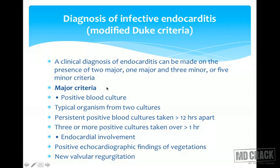Major criteria include: positive blood culture with a typical organism from two cultures, or persistent positive blood cultures taken more than 12 hours apart, or three or more positive cultures taken over one hour apart. Endocardial involvement shown by positive echocardiographic findings of vegetations, or new valvular regurgitation, also constitutes a major criterion.